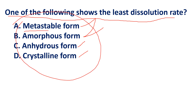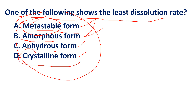The metastable form is unstable and converts into stable form, but it is more soluble compared to the stable form. The amorphous form also has higher solubility. The crystalline form has the least solubility and therefore the least dissolution rate. The answer is D — crystalline form.